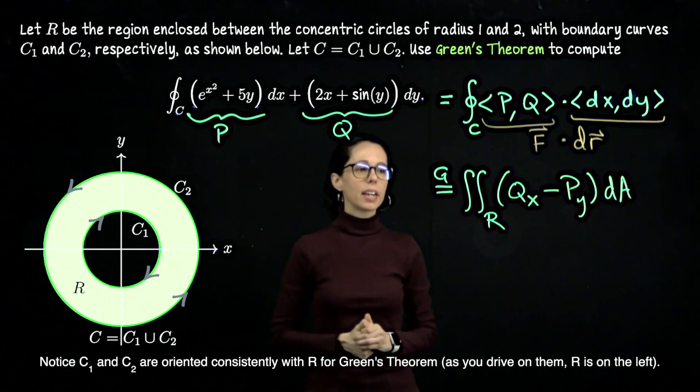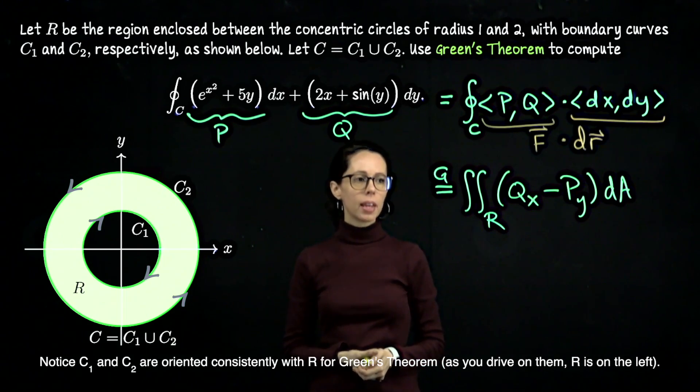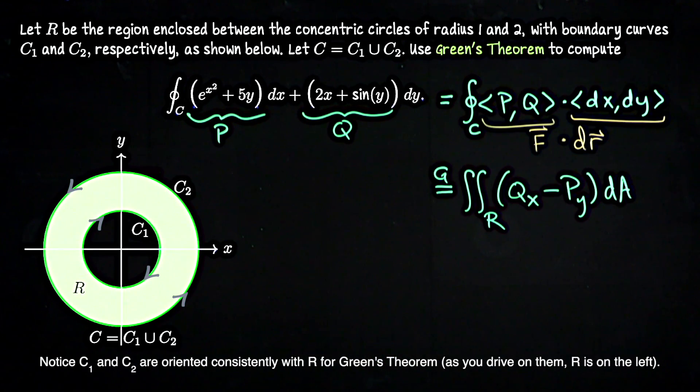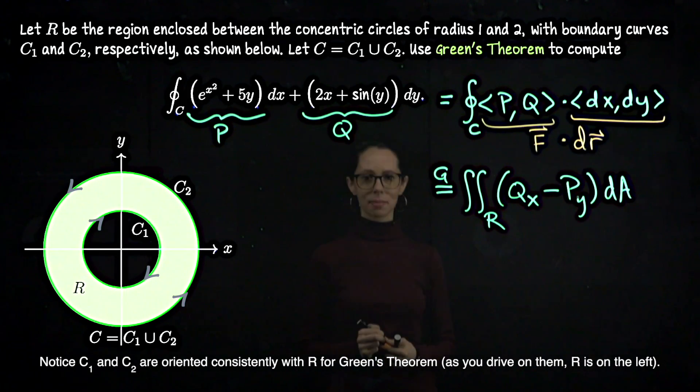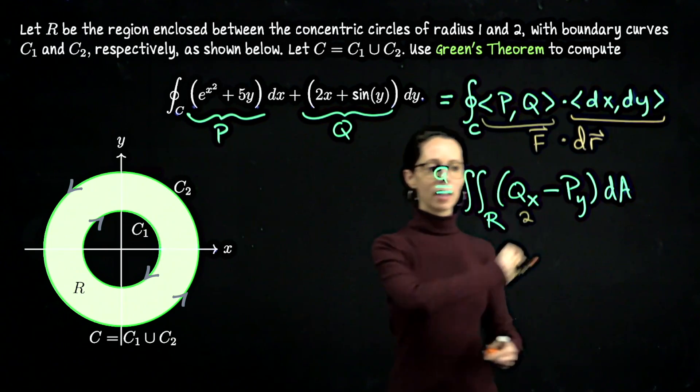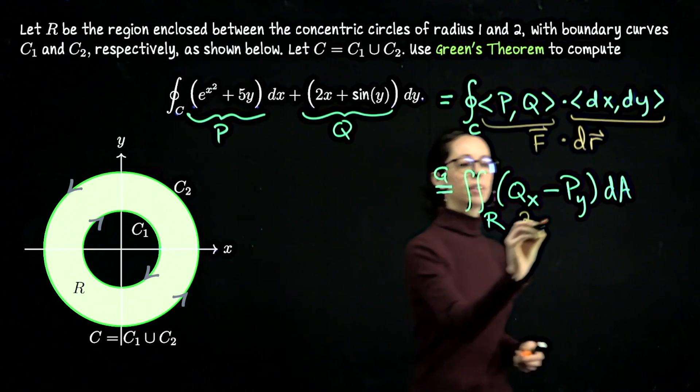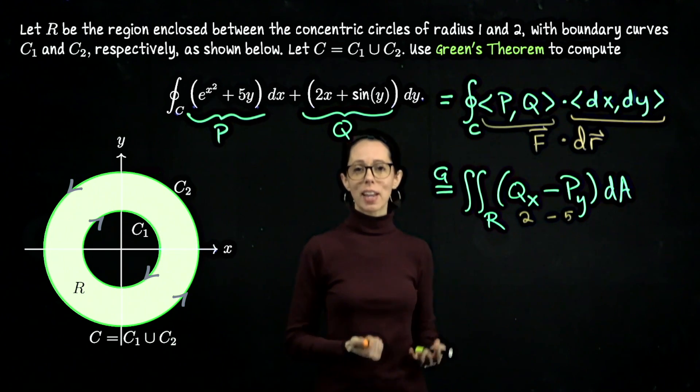Let me go ahead and pause here to give you a chance to do this integrand expression yourself. So take a moment to compute dQ/dx and dP/dy. All right, d/dx of 2x plus sine y is 2. And then d/dy of e to the x squared plus 5y is 5. So that overall we're looking at 2 minus 5, which is negative 3.